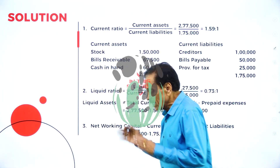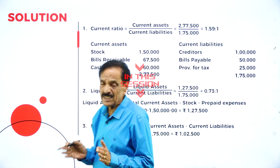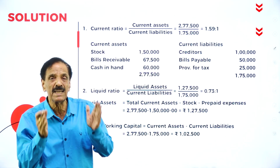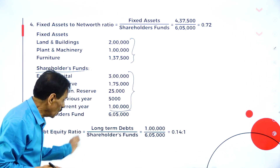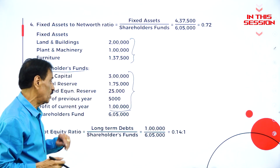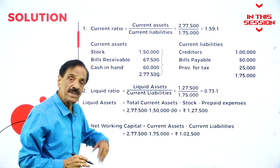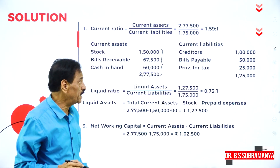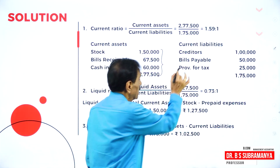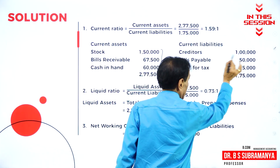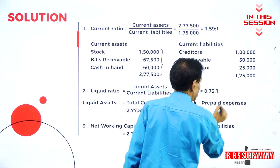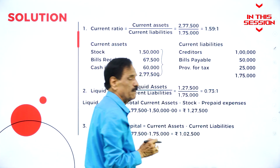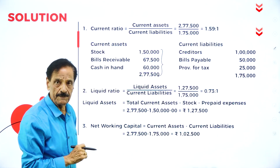What is current ratio? Current asset divided by current liability. Debt equity ratio: long term debt divided by shareholders fund. Which are the current liabilities? Creditors is a current liability. Provision for taxation 1,75,000.